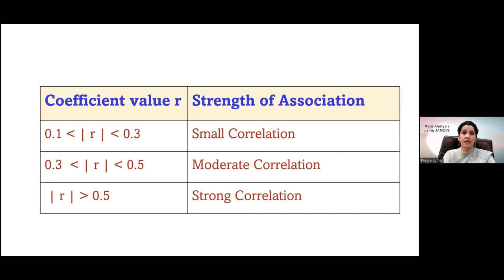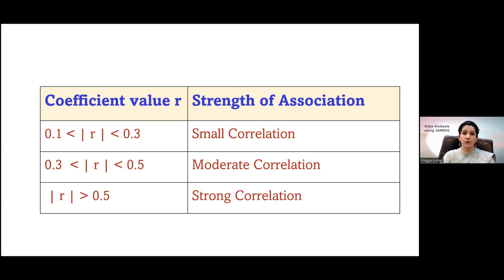We classify the strength of association into three categories: small correlation (0.1 to 0.3), moderate correlation (0.3 to 0.5), and strong correlation (anything more than 0.5). The correlation coefficient ranges from minus 1 to plus 1. In factor analysis, principal component analysis, and linear regression, this property of strong correlation — more than 0.5 or 0.6 — plays a very important role.